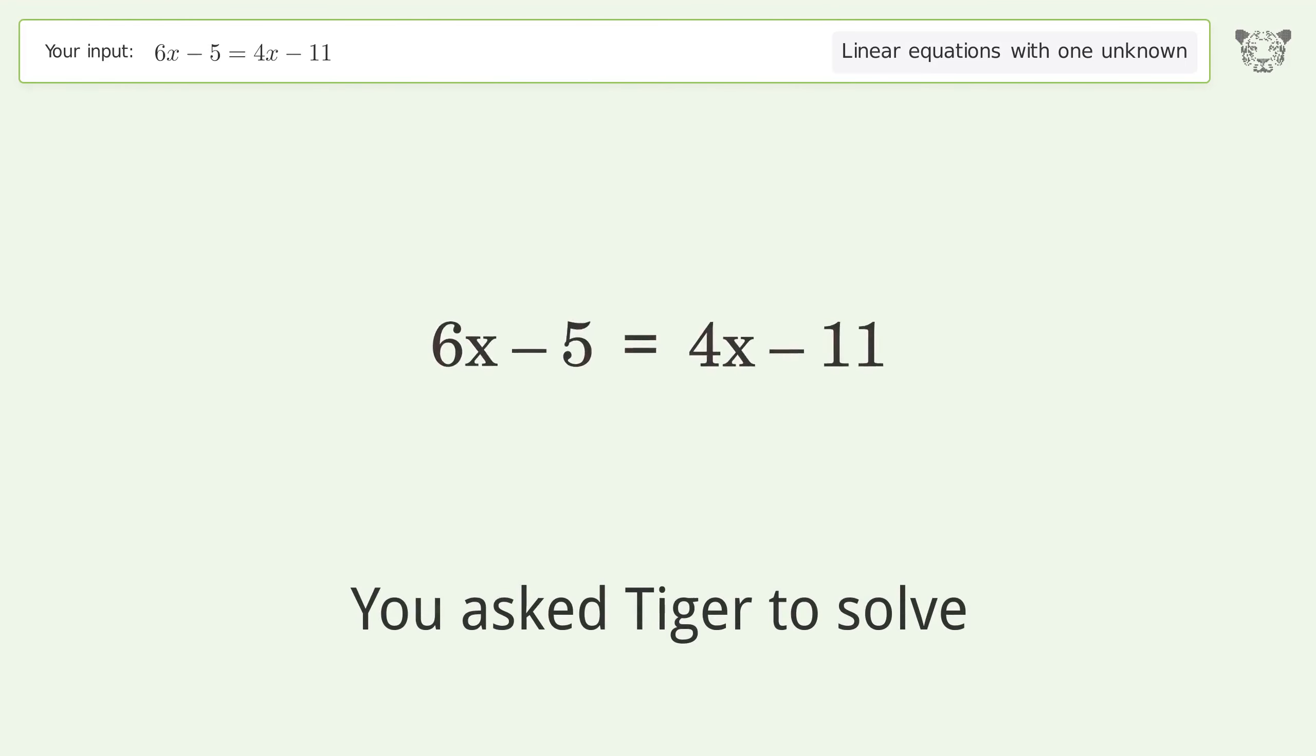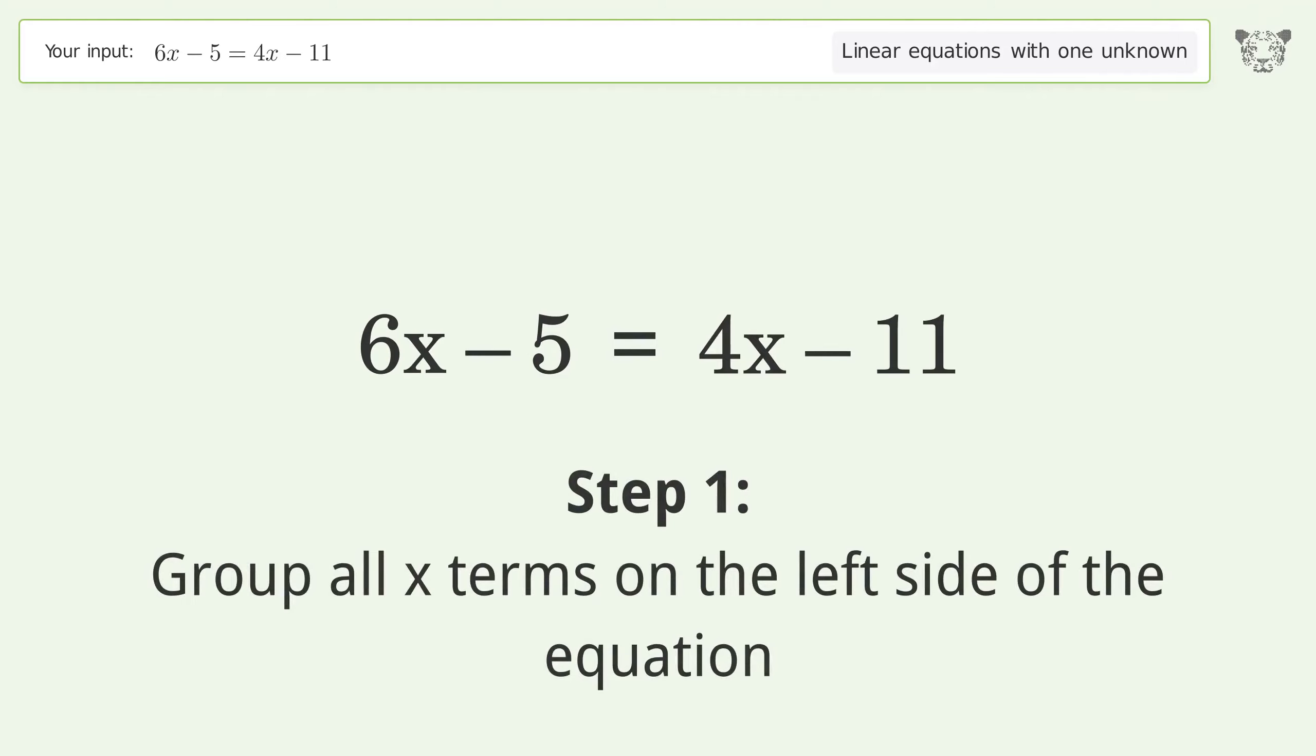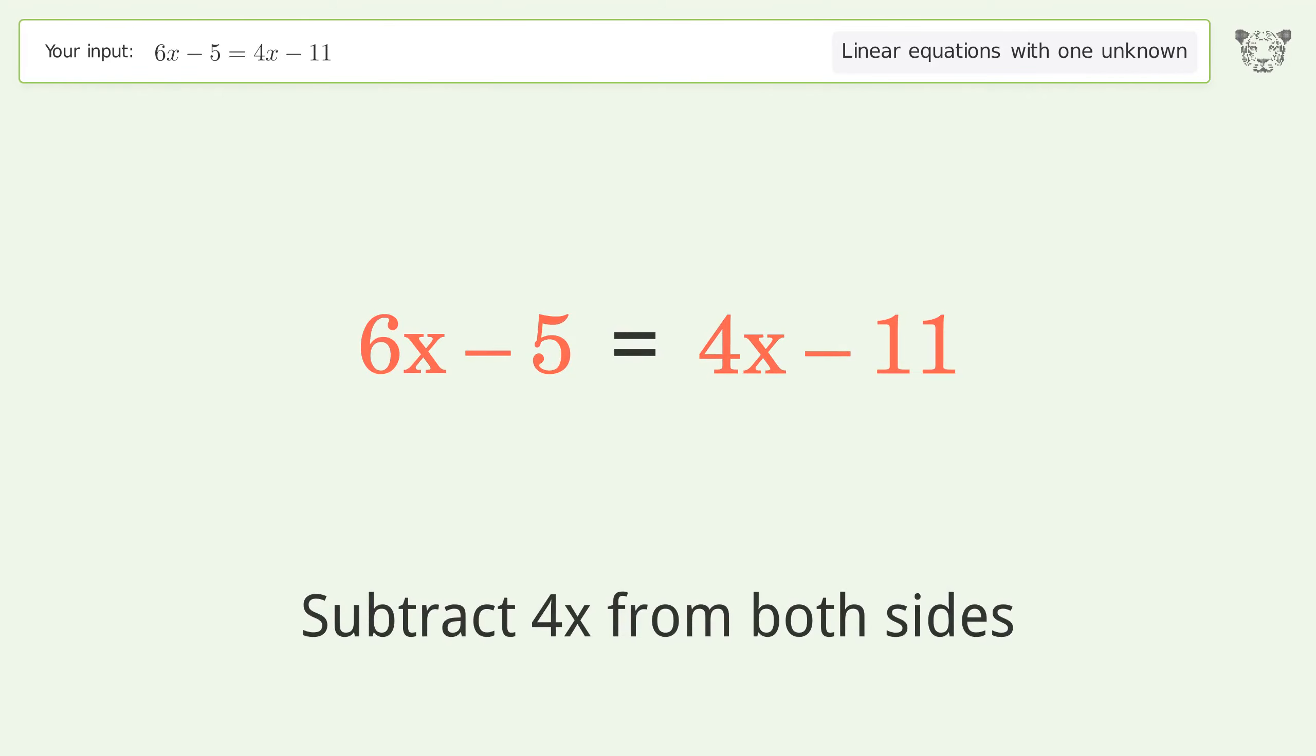You asked Tiger to solve this linear equation with one unknown. The final result is x equals negative 3. Let's solve it step by step. Group all x terms on the left side of the equation. Subtract 4x from both sides.